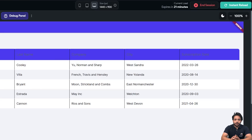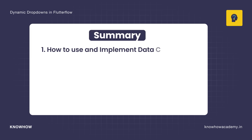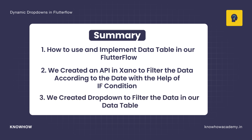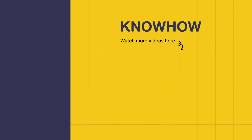In this video we learned how to use and implement a data table in FlutterFlow. We created an API in Xeno to filter data according to dates using if conditions, and created a dropdown to filter data in our data table. We can also add dividers and divider colors in the data table properties. Thank you for choosing KnowHow Academy — stay curious and keep learning.